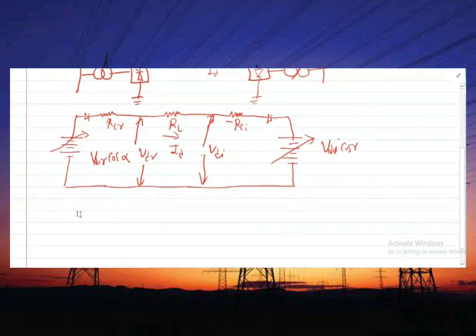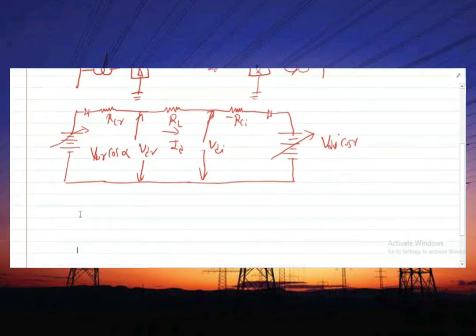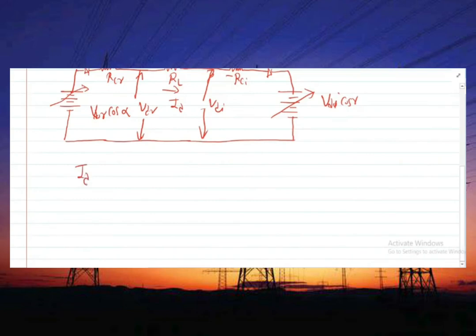This single line diagram shows the direct current ID flowing from the rectifier to the inverter is represented by: ID = (VDO_R cos alpha - VDO_I cos gamma) divided by (RCR + RL + RCI). This is the direct current going from the rectifier to the inverter.